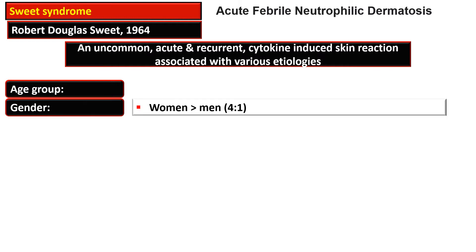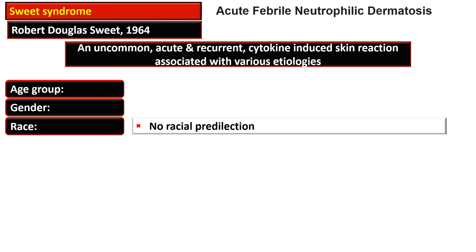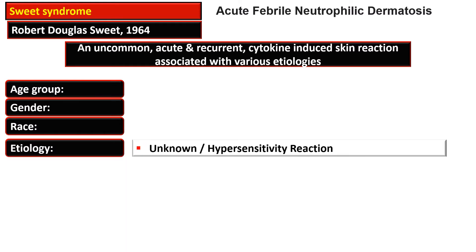The people between the age of 30 to 60 years are most affected by this disease. It is most common in women compared to men — four times as common in women than in men. There is no racial predilection observed for this disease.